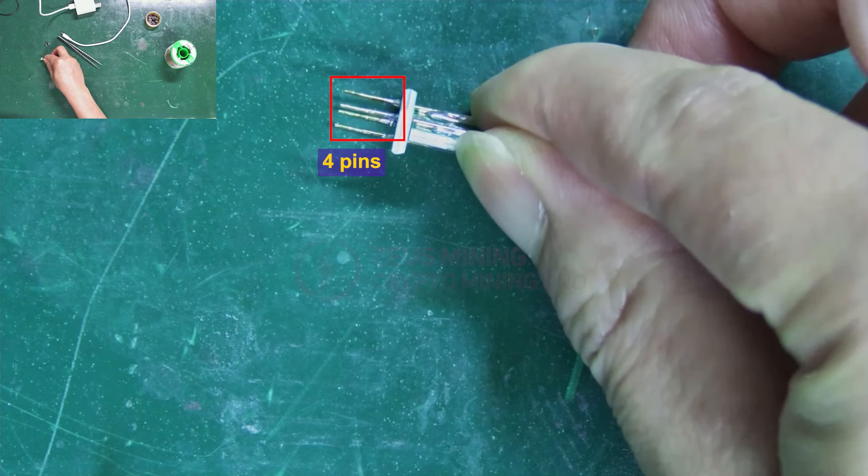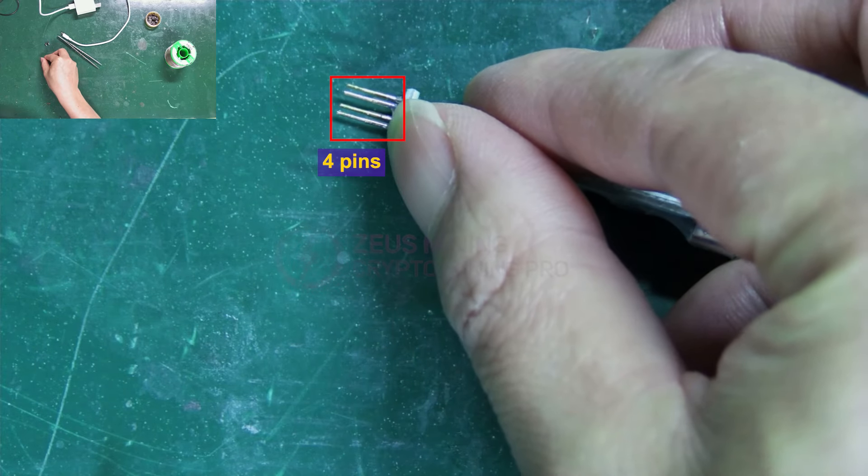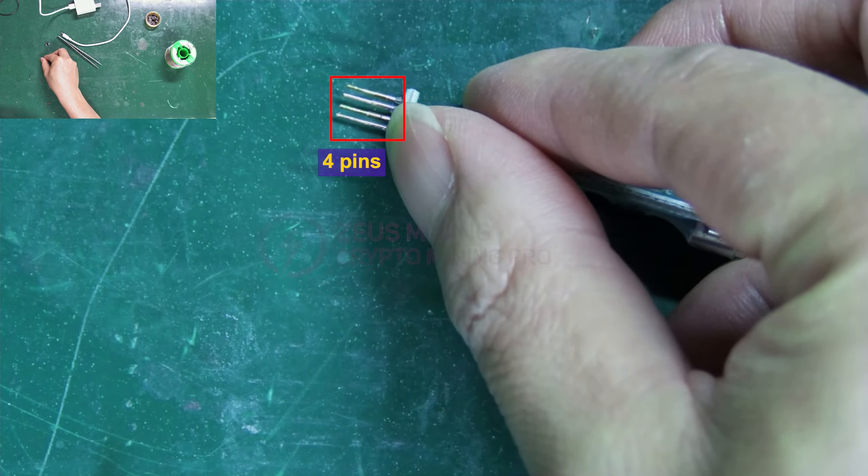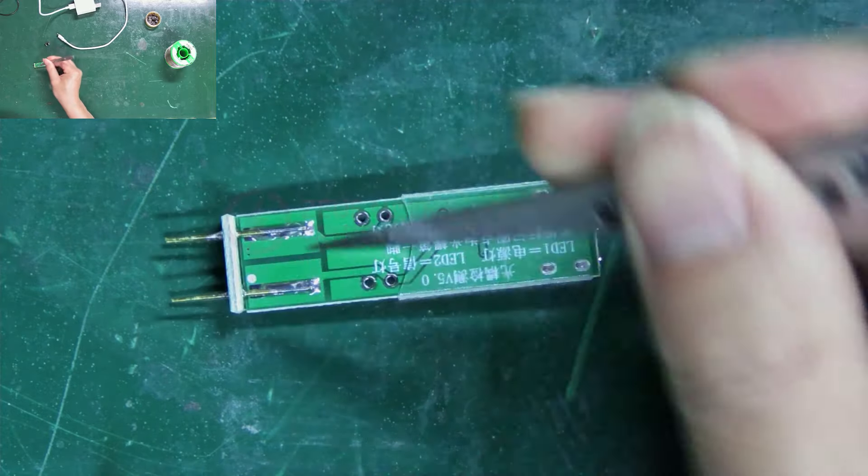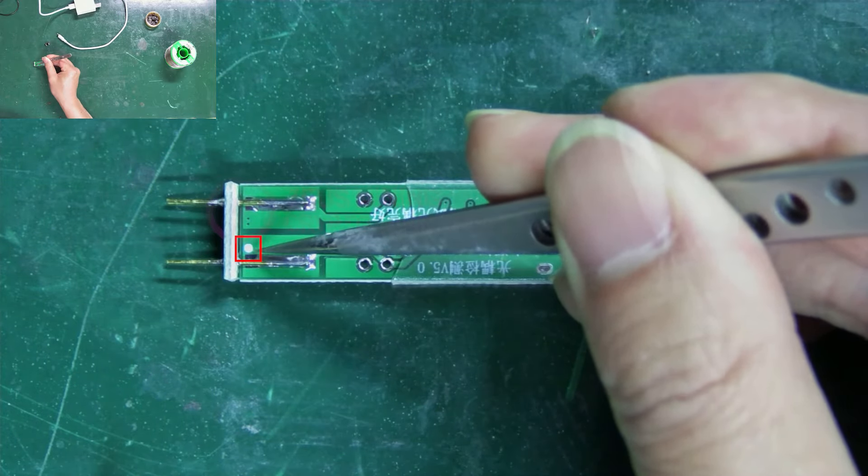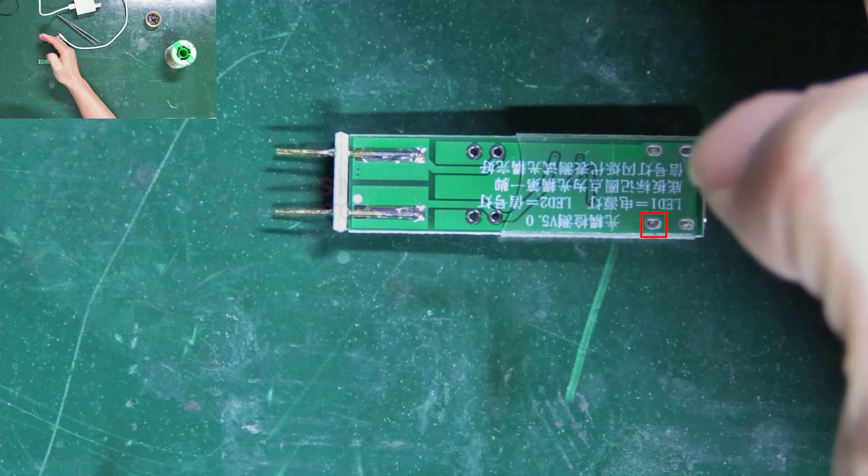These 4 pins are for online testing, and can be used to detect both direct insert optocouplers and SMD optocouplers. The back side also has a white dot corresponding to pin 1 of the optocoupler.